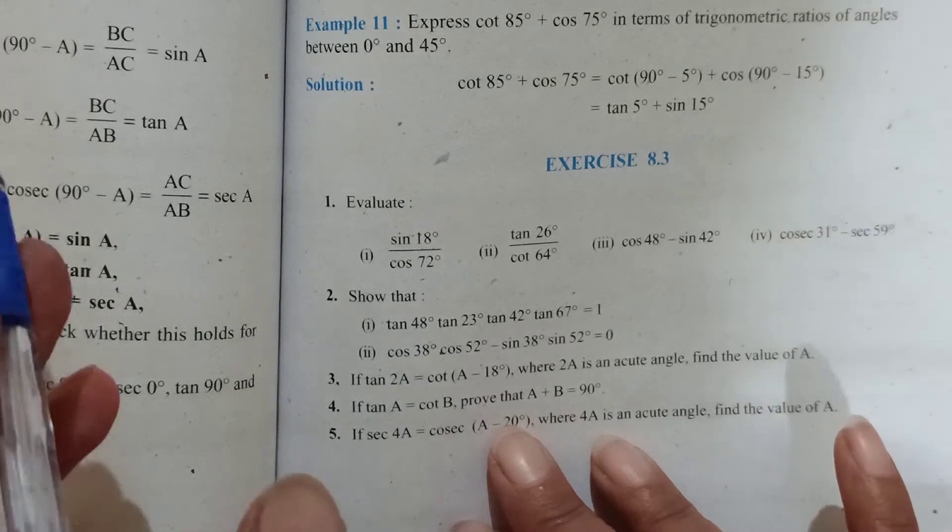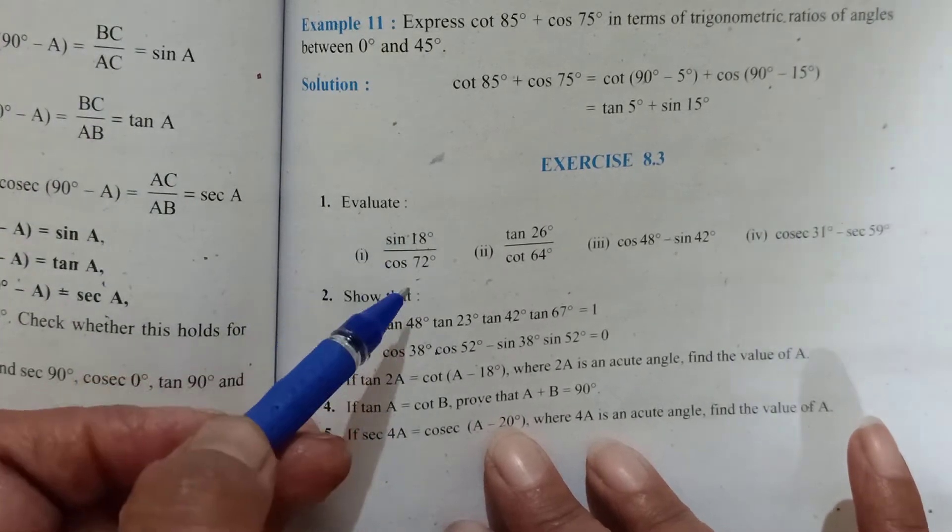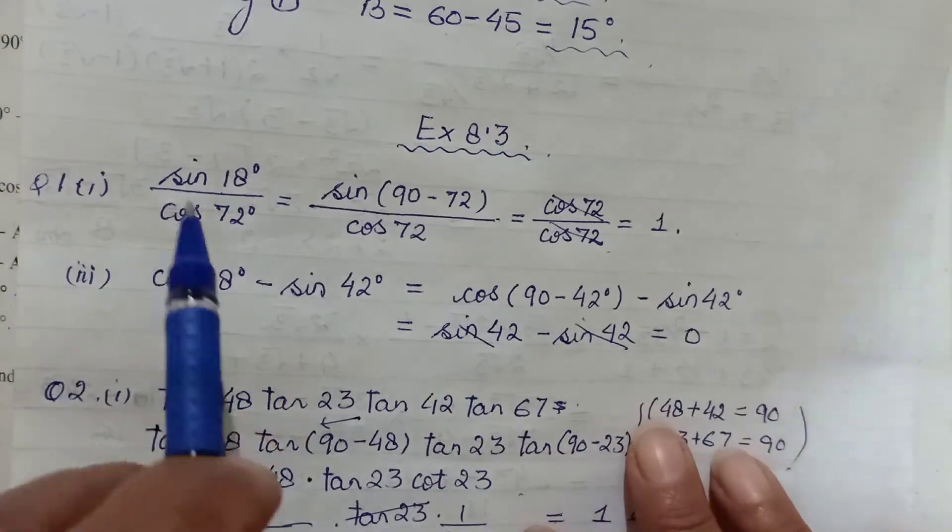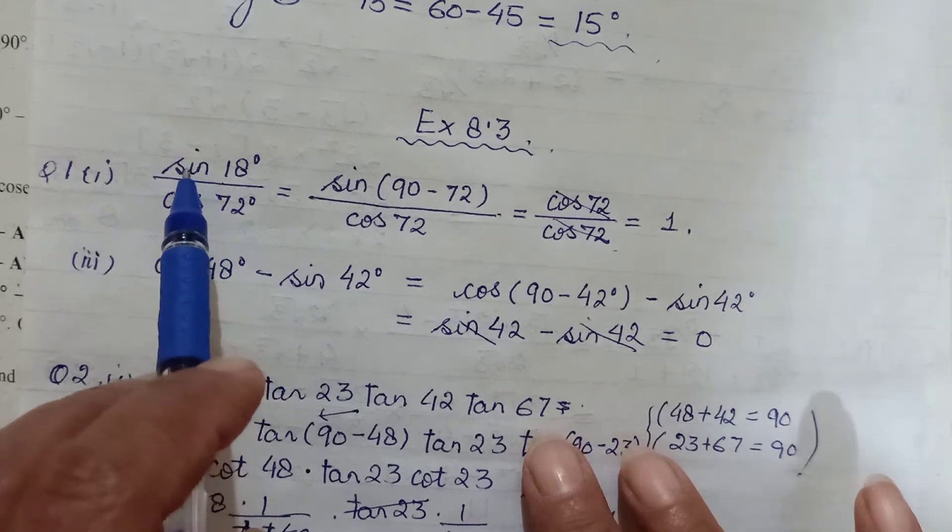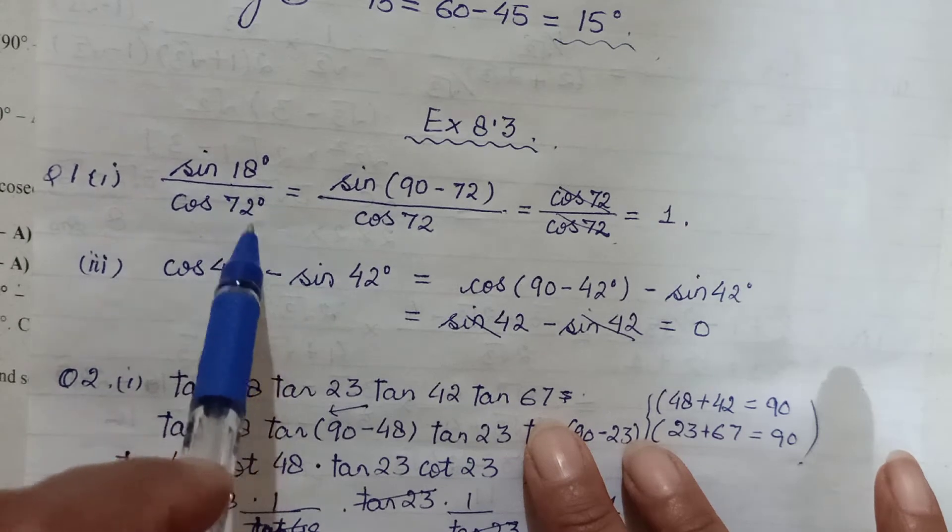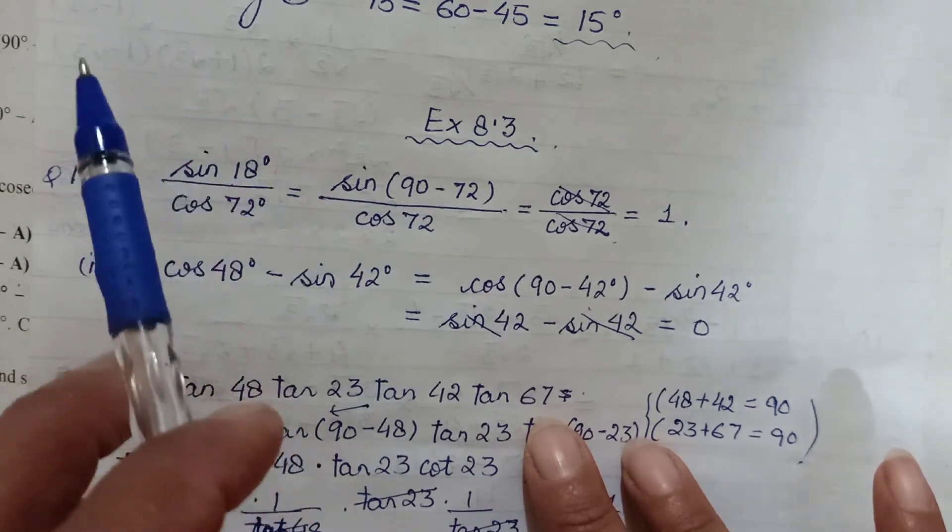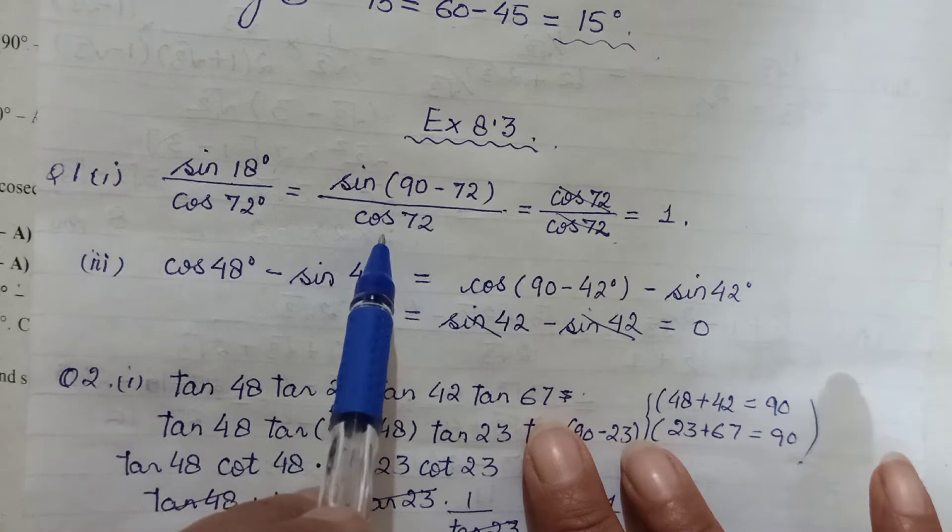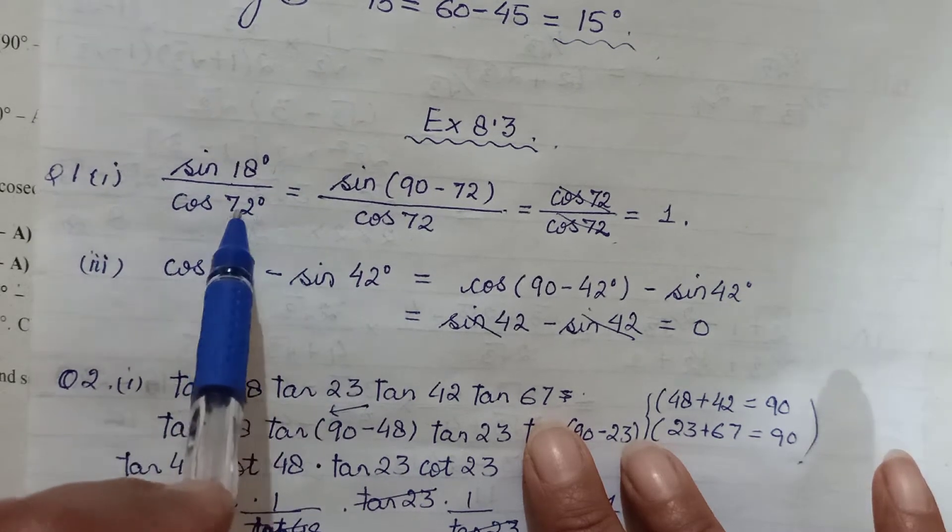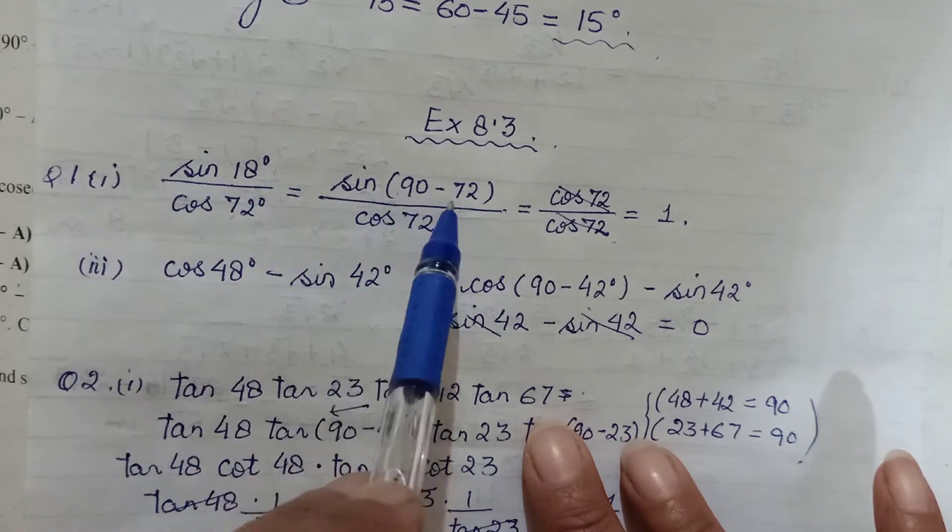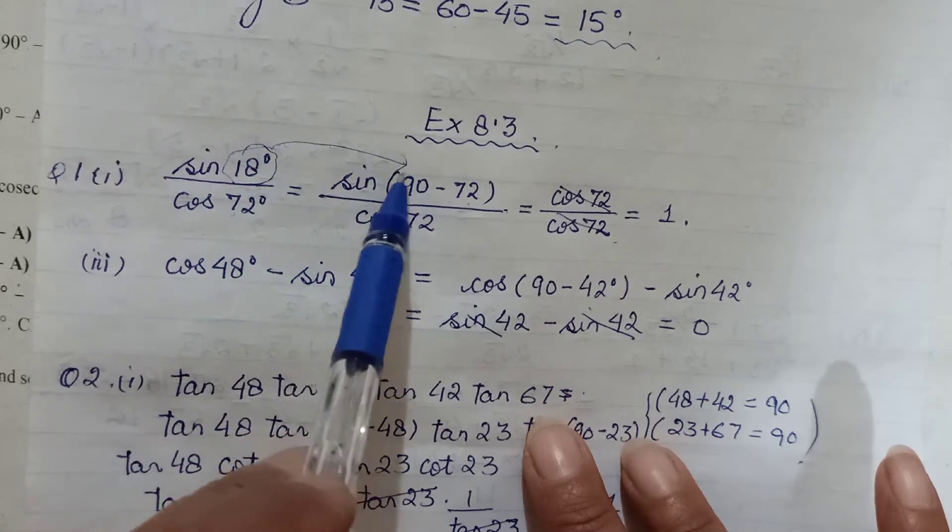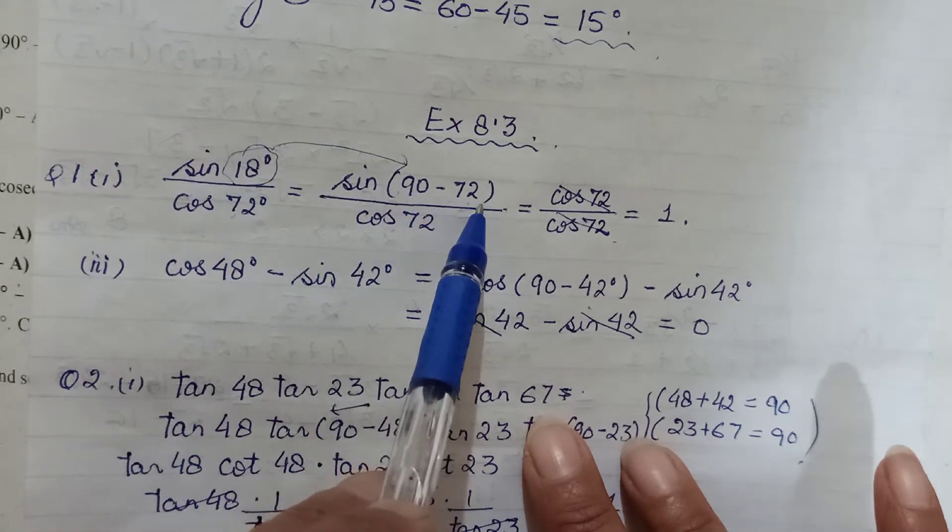Don't do both together because one will go up and another will come down, then it won't work. So one you will keep as it is, maybe numerator, maybe denominator. I have done it by changing the numerator. You could have similarly changed the denominator. There is no hard and fast rule that you have to change the numerator. Denominator can also be changed, but only one will change. Here I have left the denominator as it is, cos 72, and 18 is complement of this. If 18 plus 72 is 90, I can write 18 as 90 minus 72.